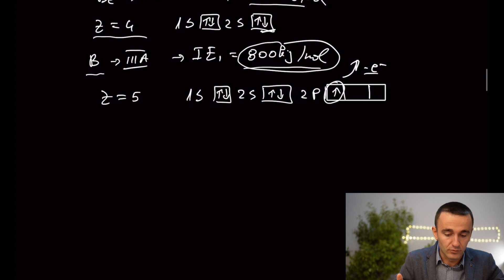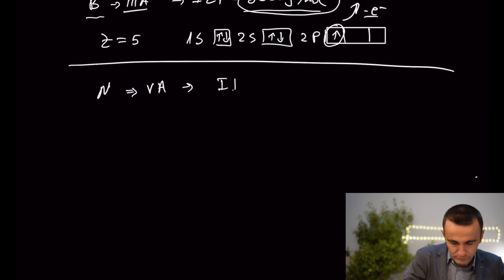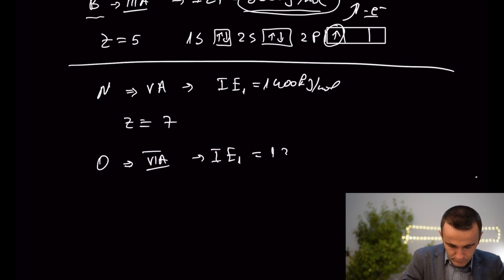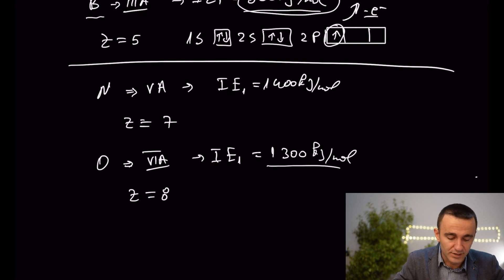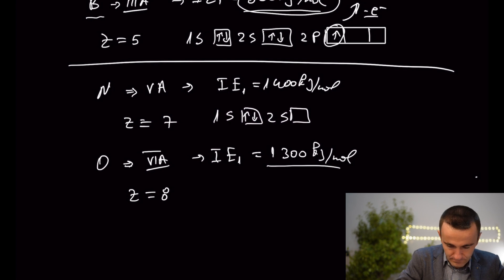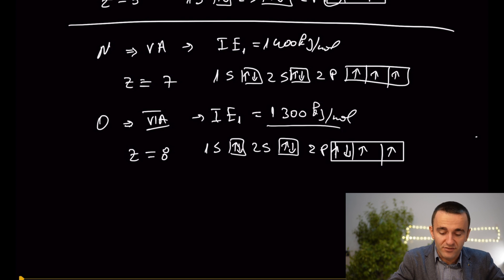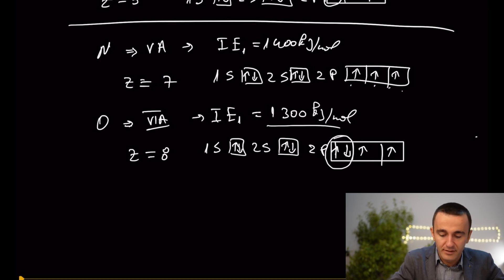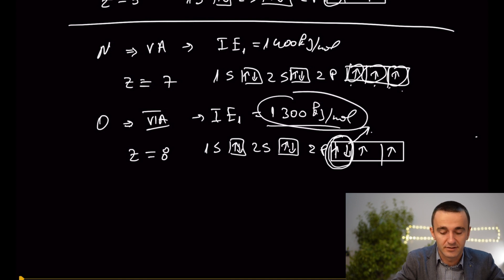The second exception is oxygen, in Group 6A. Oxygen has a lower first ionization energy compared to nitrogen, which is against the trend. Again, we explain this through electronic configuration. At the 2p orbitals, oxygen has paired electrons, whereas in nitrogen all electrons are singly occupied. Due to the repulsion within the paired orbital, that electron in oxygen is much easier to remove — that is why oxygen has a lower first ionization energy than the trend would predict.